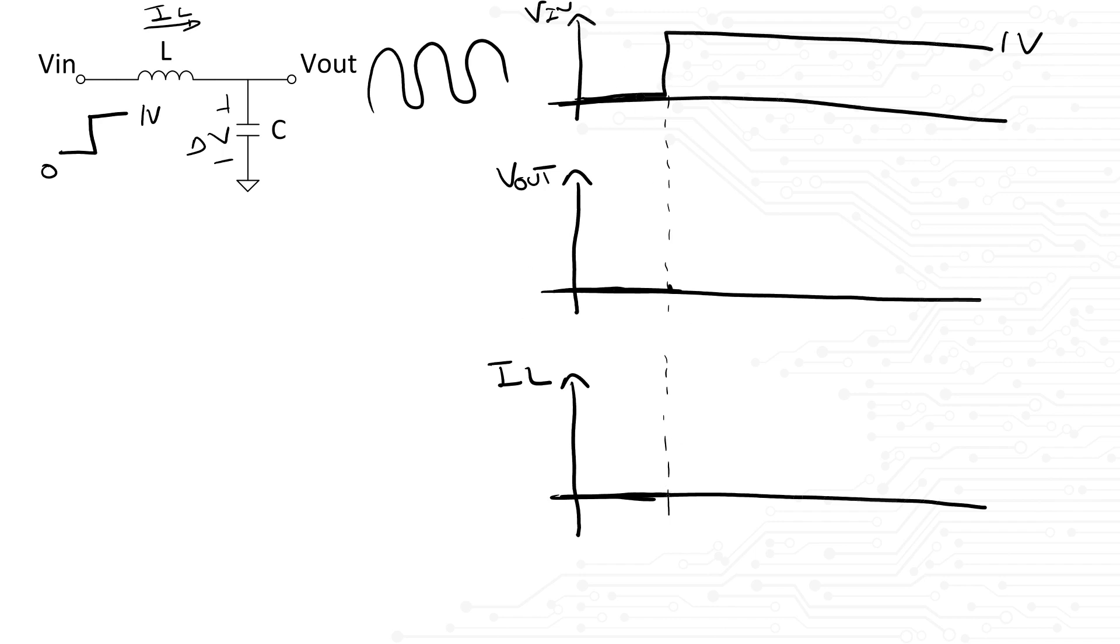Right after the step, we have a voltage drop across the inductor, a delta V of 1 volt. That means the inductor should start building current. We know the voltage across the inductor is equal to L di dt. Solving for di means that delta V divided by L times delta T will give us the slope of the current. In other words, the slope is defined as the input voltage 1 volt minus the output voltage 0 divided by L.